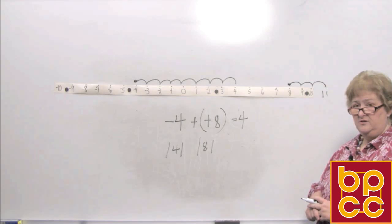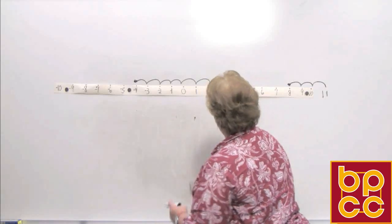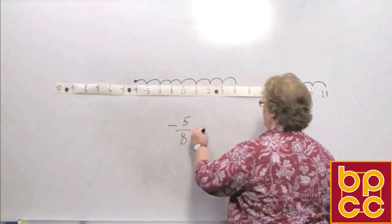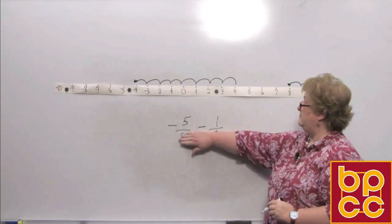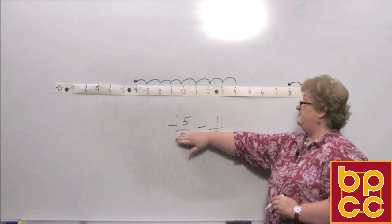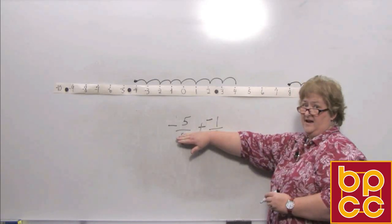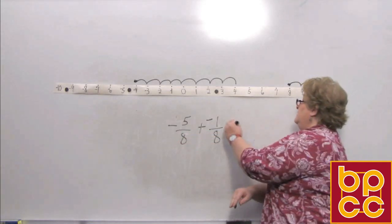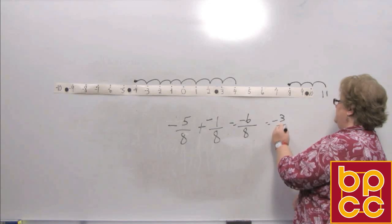Now you can do the same thing with fractions or decimals. Let's try: negative 5 eighths minus 1 eighth. We're going to do the very same thing. That says negative 5 minus 1 — we don't subtract, so that's negative 5 plus a negative 1. When the signs are the same, you're adding more of the same, so that's negative 6 over 8. If we reduce that, it would be negative 3 fourths.